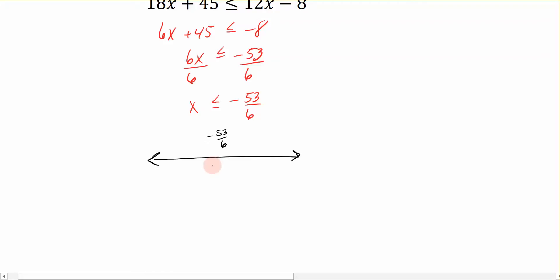I'll draw it right in just a second. Okay, so I want values that are less than negative 53 over 6. And because this is a less than or equal to, I'm looking for a bracket.